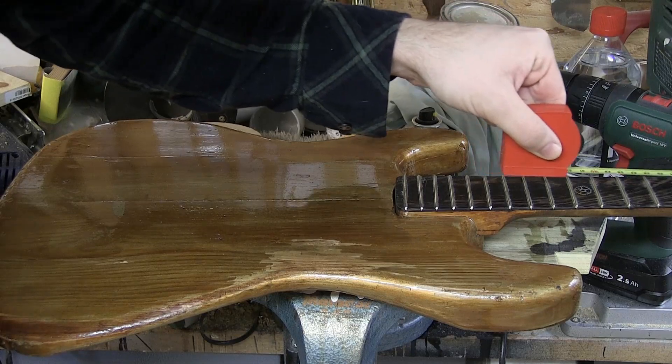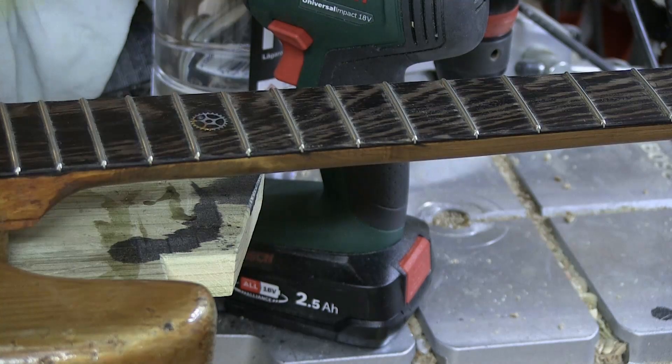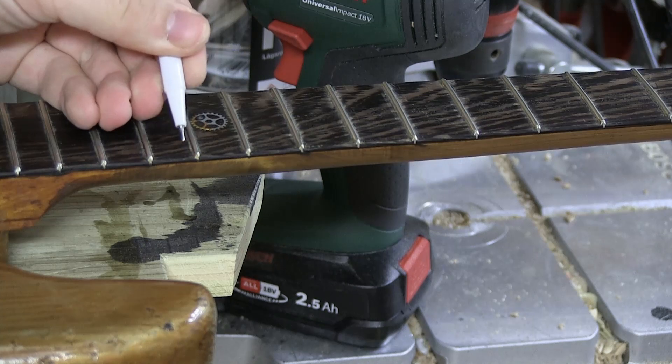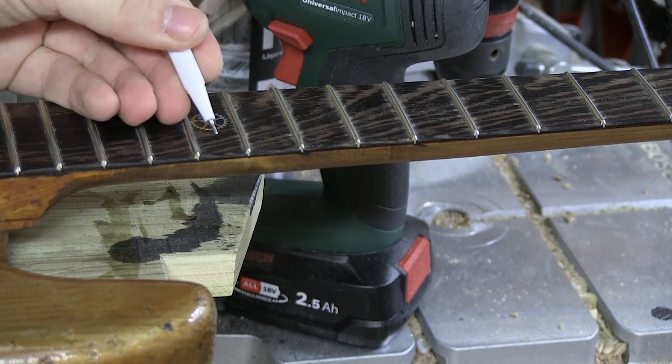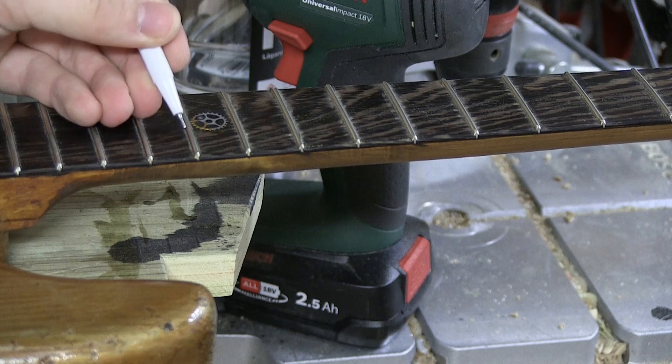So the first thing we have to do is measure to the 12th fret right up there, and it's this side of the 12th fret, not this side of the 12th fret, because that's where the string gets cut off.